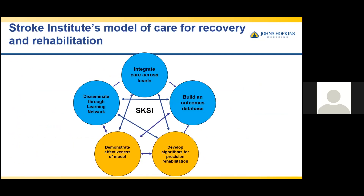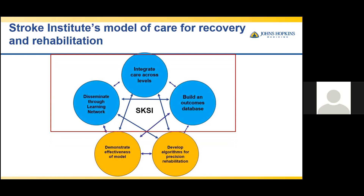In order to shift from the current care focusing on mainly moving patients along the continuum of care versus recovery, we needed a new model of care for recovery and rehabilitation. Each circle highlights the crucial components of this new model. This includes the integration of care across levels, building an outcome database, developing algorithms for precision medicine rehabilitation, disseminating through a learning network, as well as demonstration of effectiveness of this model. Today, I will focus and highlight on the blue portion of these components as we implement this into our care.